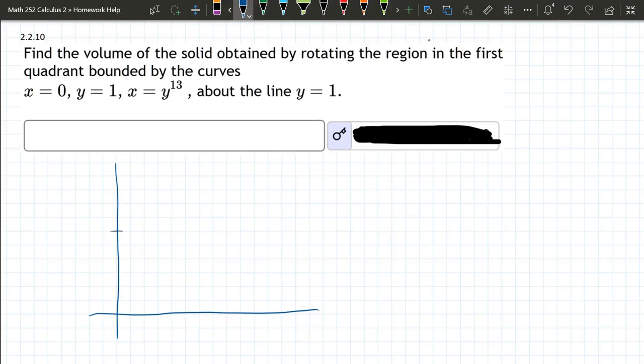We'll say that's 1 right there. Y equals 1's a horizontal line. There's another. X equals Y to the 13th.